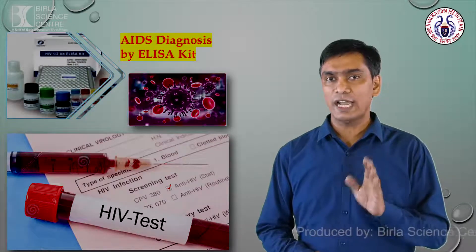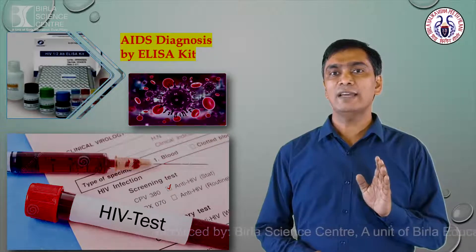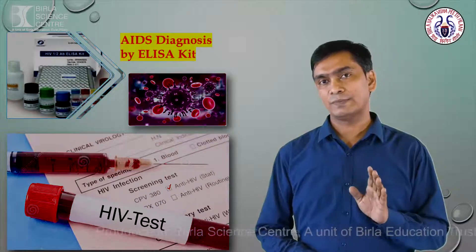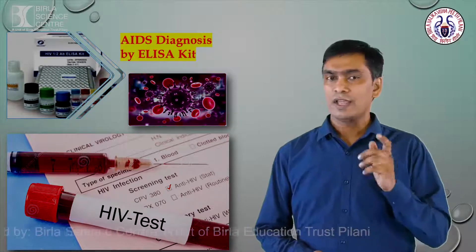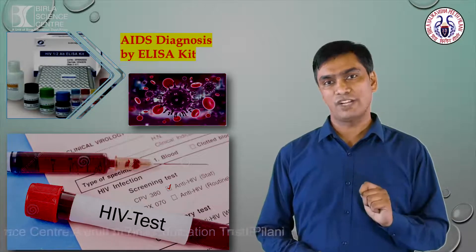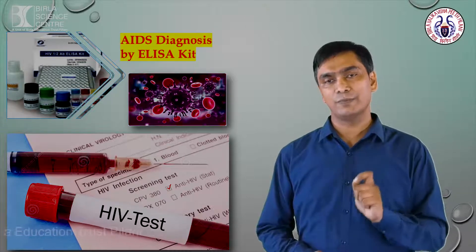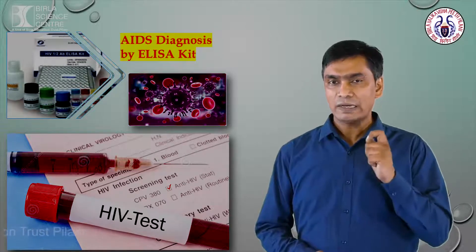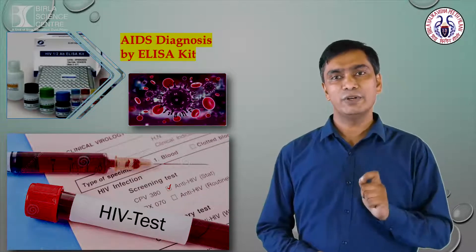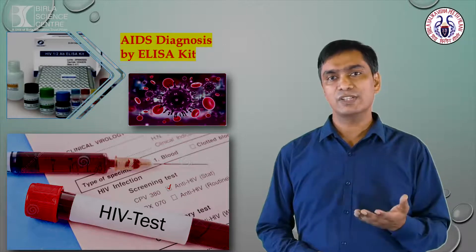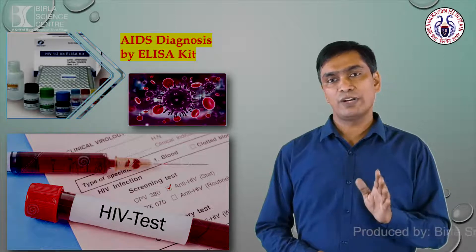The diagnostic test for AIDS is ELISA. The full form of ELISA is Enzyme-Linked Immunosorbent Assay. The full form of AIDS is Acquired Immunodeficiency Syndrome. AIDS is caused by HIV infection. HIV mainly targets the T-cells and T-lymphocytes of the body, and day by day this virus destroys our cell-mediated immunity. Ultimately, the immune system becomes weak, and within 5 to 10 years the person may die if no proper treatment is carried out.